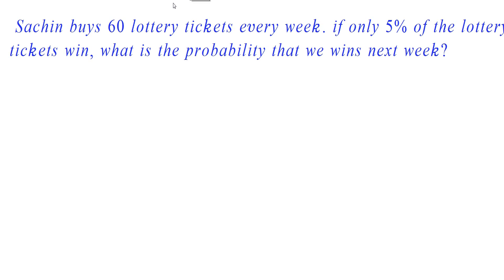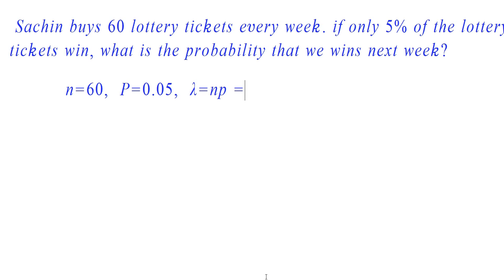We are given that 60 lottery tickets are bought every week. Therefore, N is equal to 60. We need to find the probability of winning lottery tickets in the next week. The chances of winning the lottery tickets are given by 5%. Therefore, the parameter P can be taken as P is equal to 0.05.